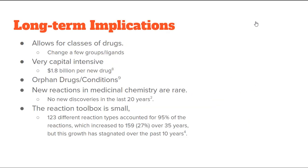Some long-term implications: this process allows for classes of drugs — change a few groups or ligands and you end up with a new drug that is very similar, but bacteria or viruses may not have resistance to it. That's why we keep synthesizing antibiotics similar to previous ones but with a couple of functional groups changed or a few ligands removed or added.